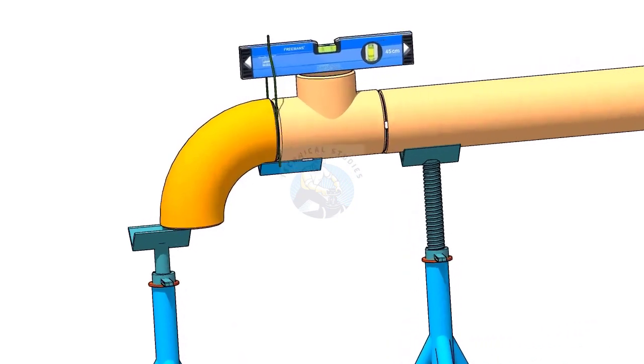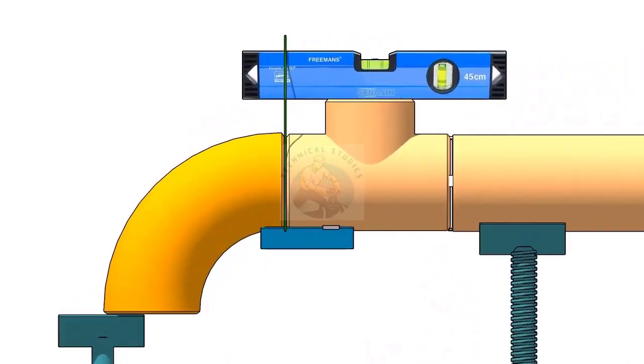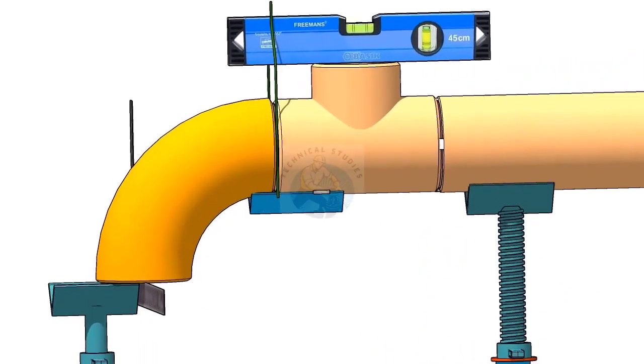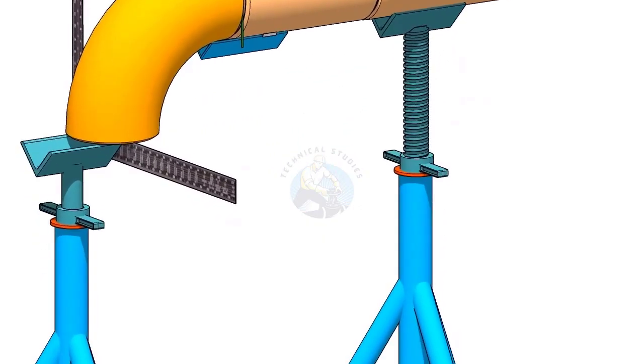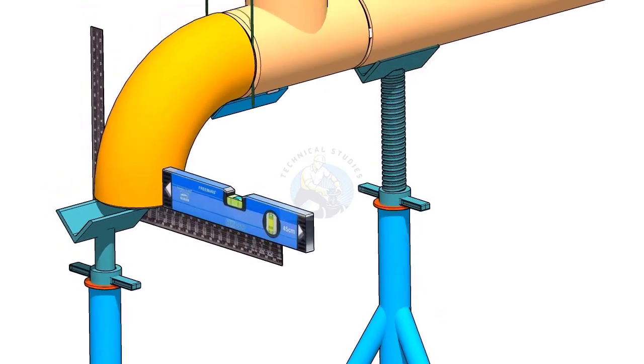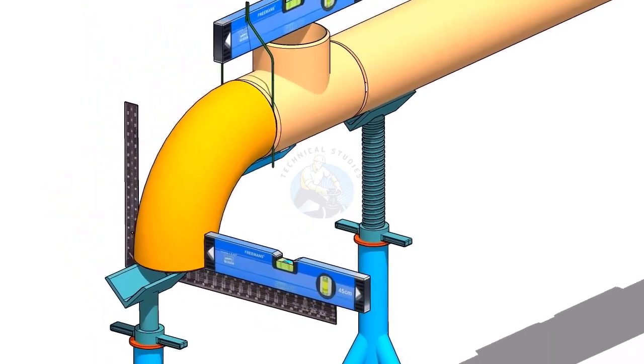Hold a large right angle or a straight edge below the elbow face firmly. Put a level bottle on the right angle as shown. Rotate the elbow to make the face level. Tack weld on both sides of the elbow with the tee.